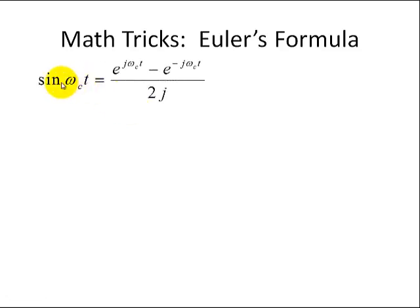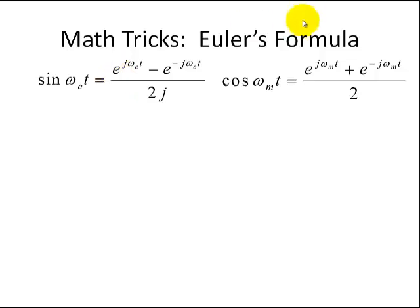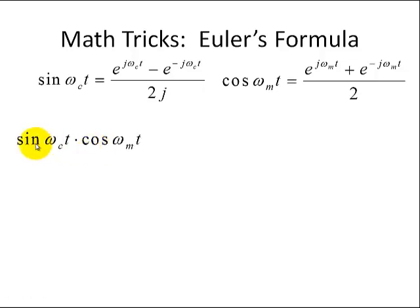Here are our sine and cosine functions based on Euler's formula. For the sine, we have a difference of complex exponentials, and for the cosine, we have a sum of complex exponentials. We're going to multiply sine(omega_c * t) by cosine(omega_m * t) and substitute the corresponding Euler's definitions.